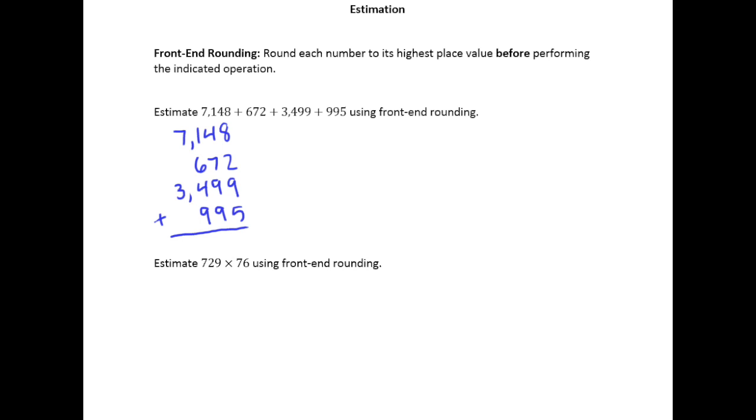But what front-end rounding says is let's take each number and round it to its highest place value. The highest place value of 7,148 is the thousands place. So I look at the thousands place and notice that the test digit, the one to the right, is 1. So that means we're going to leave a 7 in the thousands place and we're going to zero everything else out.